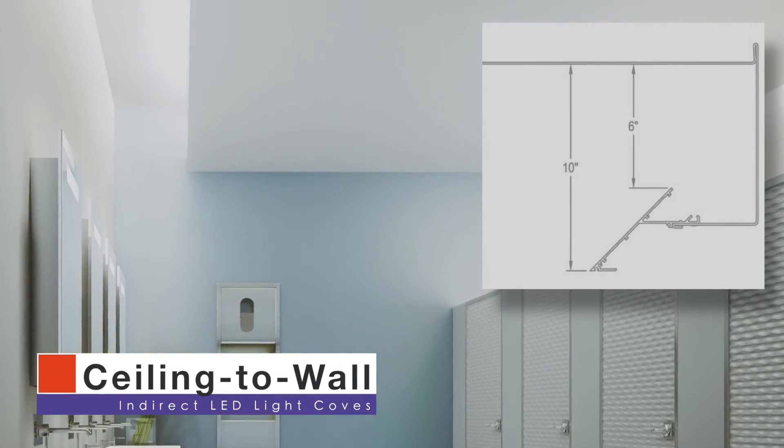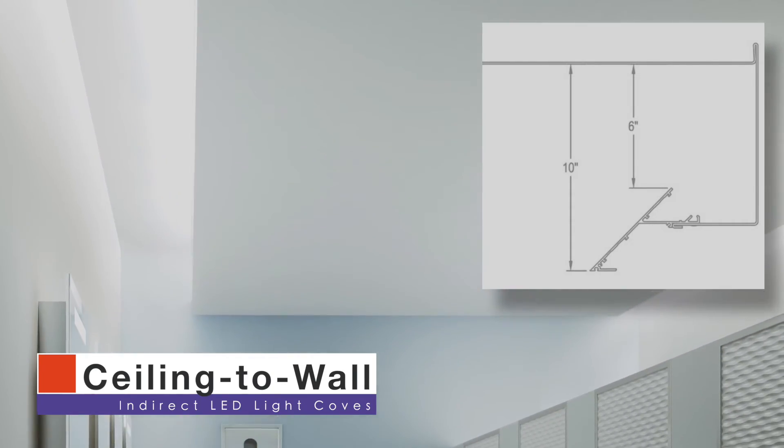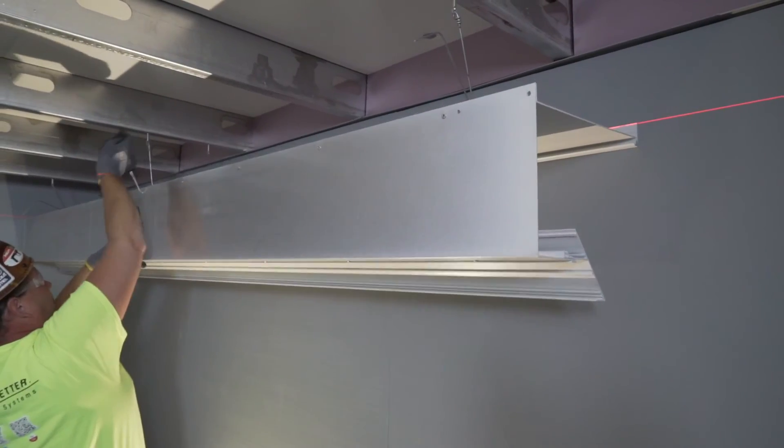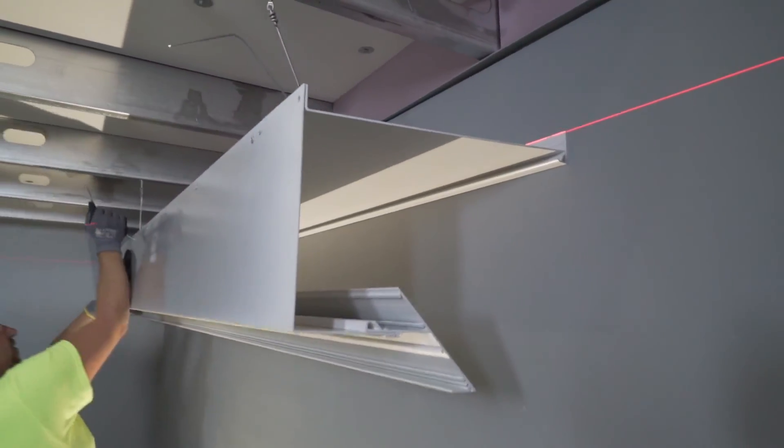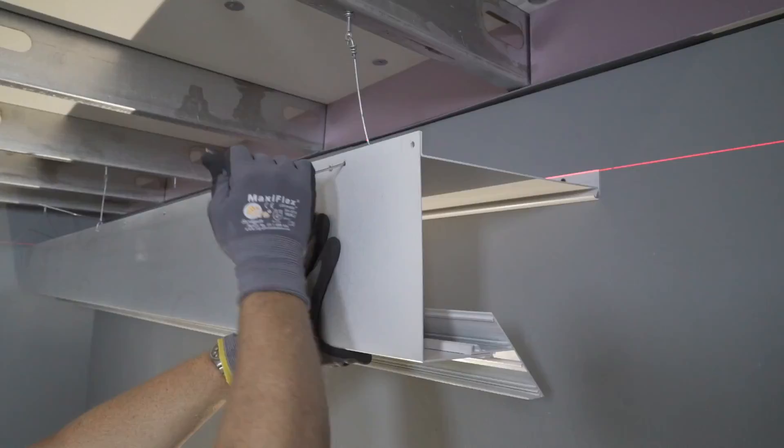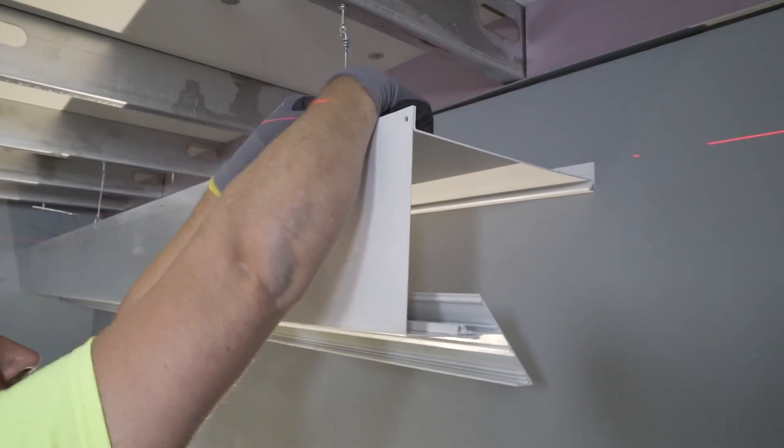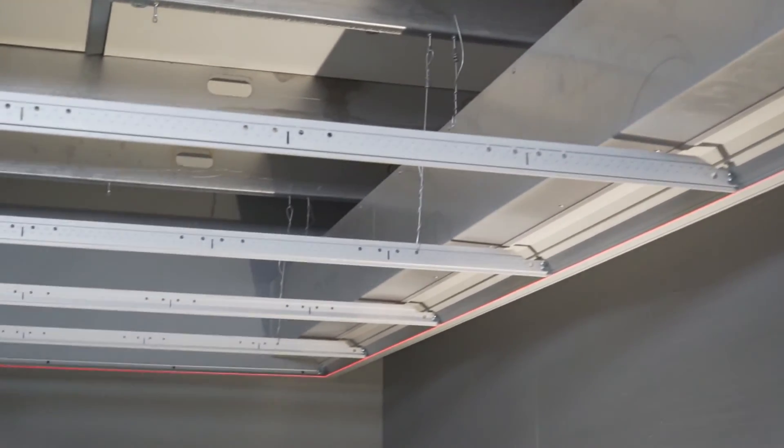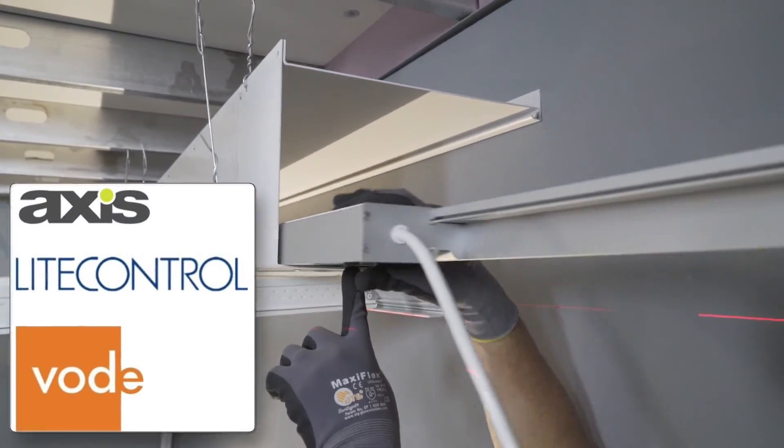Ceiling-to-wall indirect coves are very similar to the ceiling-to-ceiling option just reviewed. These coves simply mount to the wall via the supplied mounting rail plus 12-gauge wire four foot on center. Acoustical or drywall ceiling integration and your lighting options are the same with the ceiling-to-wall cove.